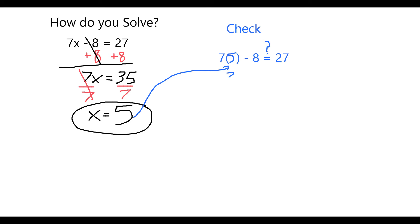7 times 5 is equal to 35, and 35 minus 8 is indeed equal to 27. Therefore, I know that my answer of 5 is the correct answer. It is the correct solution to this equation. Hope that helps. Thank you.